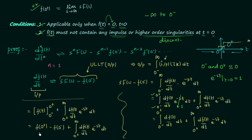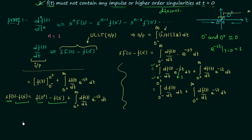On the left hand side we have S·F(S) − F(0−), and on the right hand side we have F(0+) − F(0−) plus the second integral. Comparing both sides, the −F(0−) terms cancel, giving S·F(S) = F(0+) + integration from 0+ to infinity of dF(t)/dt · e^(−st) dt.